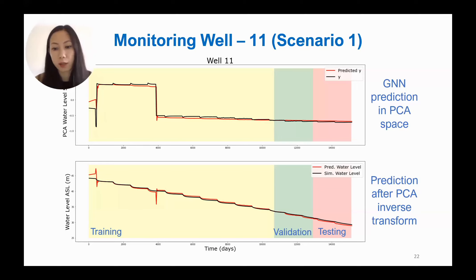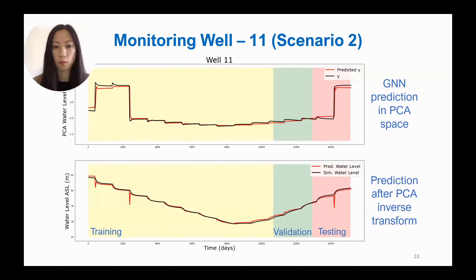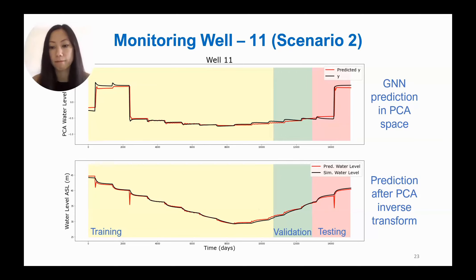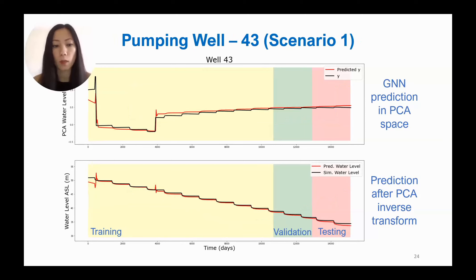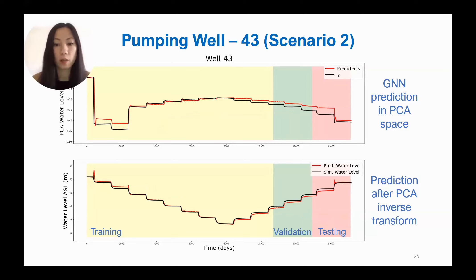We separated our time series into training, validation, and testing sets: training is used to train the model, validation to validate training results, and testing is a completely separate set. For monitoring well 11 in scenario two — which increases then decreases pumping over time — the top plot is in PCA space and the bottom is the inverse transform. Note the jump in the red graph, which is created by instability in the back-transform block in PCA space. We also show pumping well 43 for both scenario one and scenario two, with top graphs in PCA space and bottom graphs in the original space.